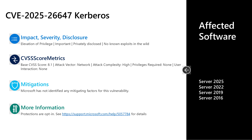To recap the stages: we are right now in the first stage where the update is available and customers can enable this mitigation. In July, it will be enforced by default. In October, the ability to disable protections will be removed. There's more information in KB article 5057784, which is also linked in the CVE article itself, covering the timeline of changes and the registry keys you'll need to be looking at.